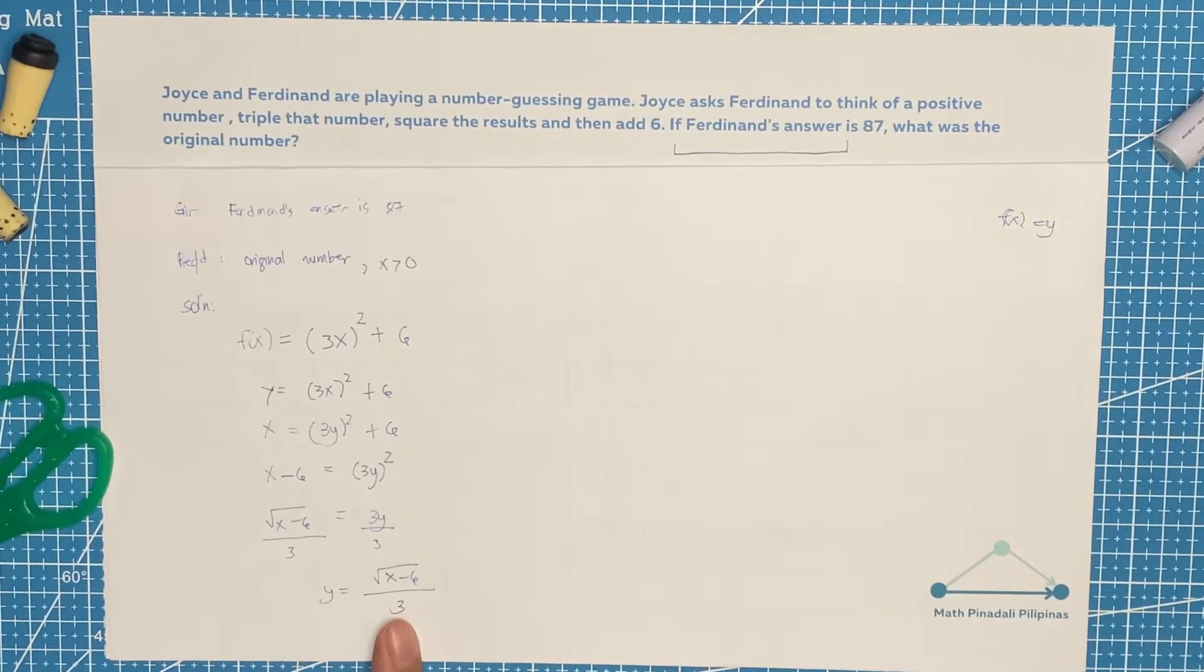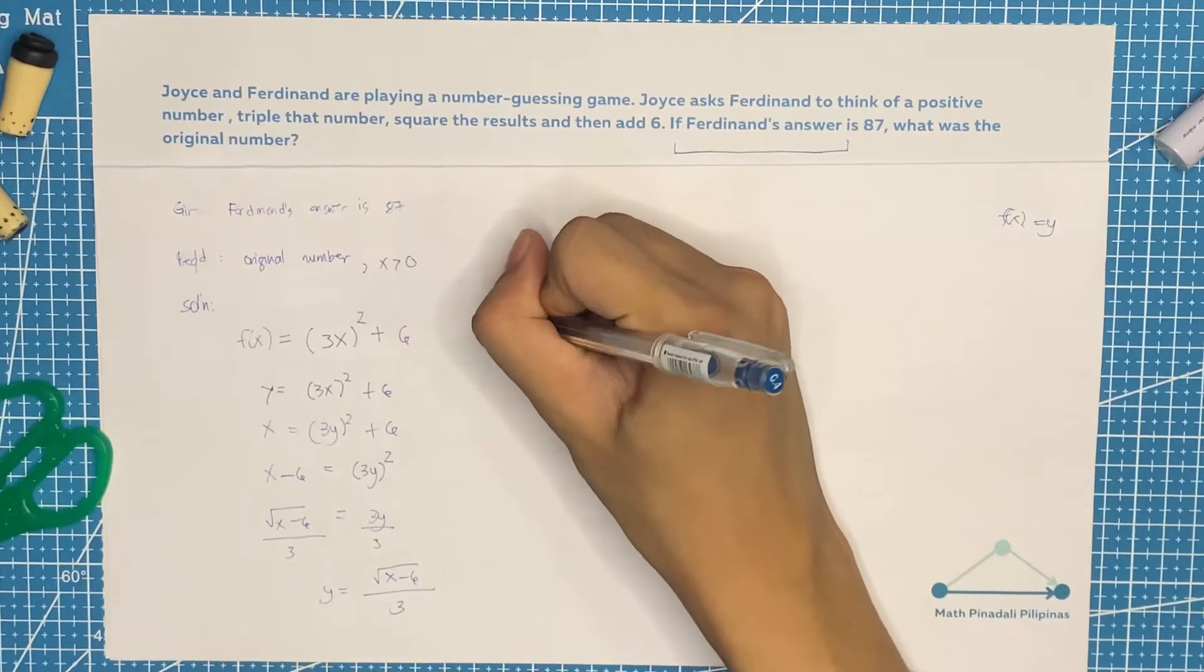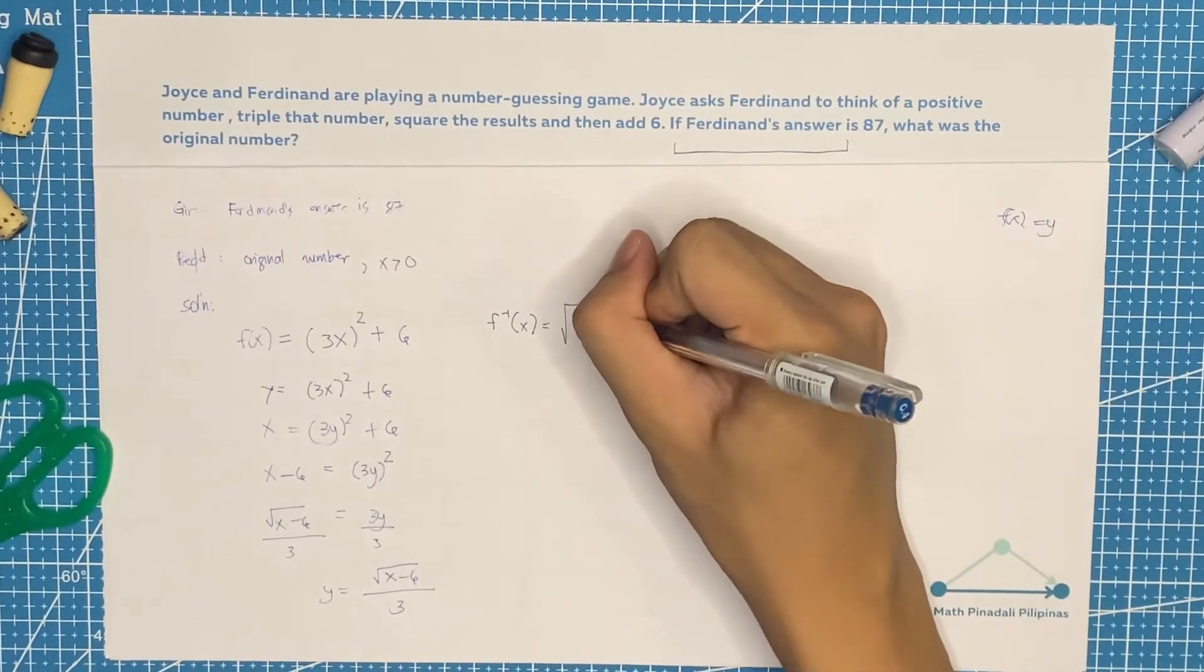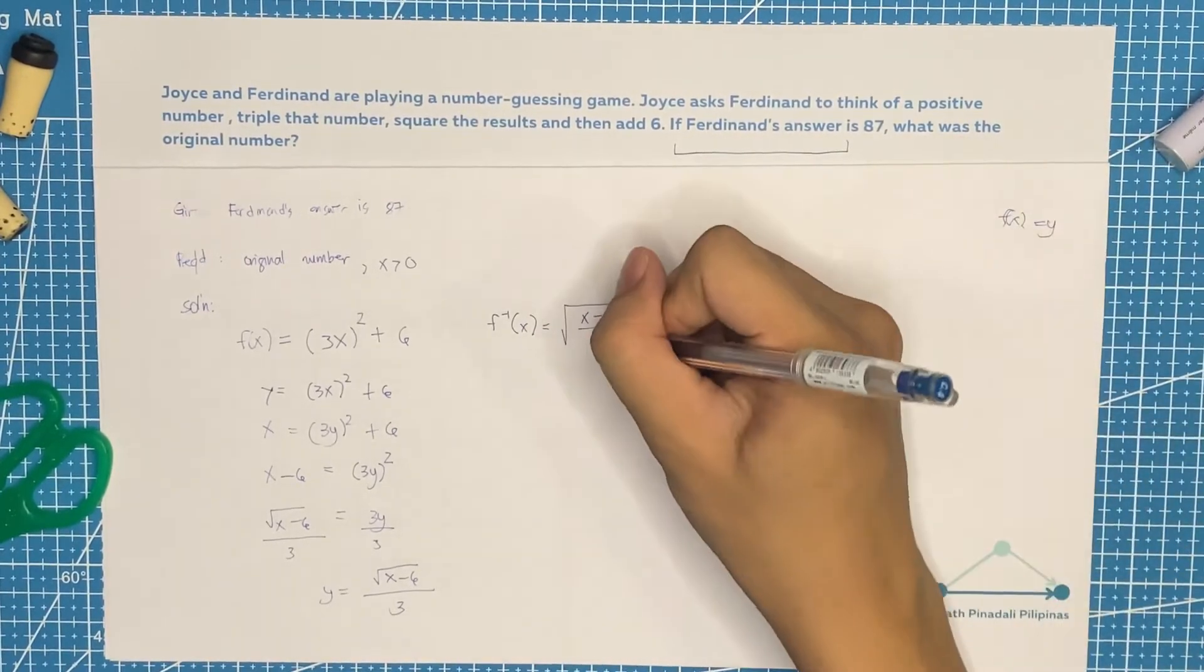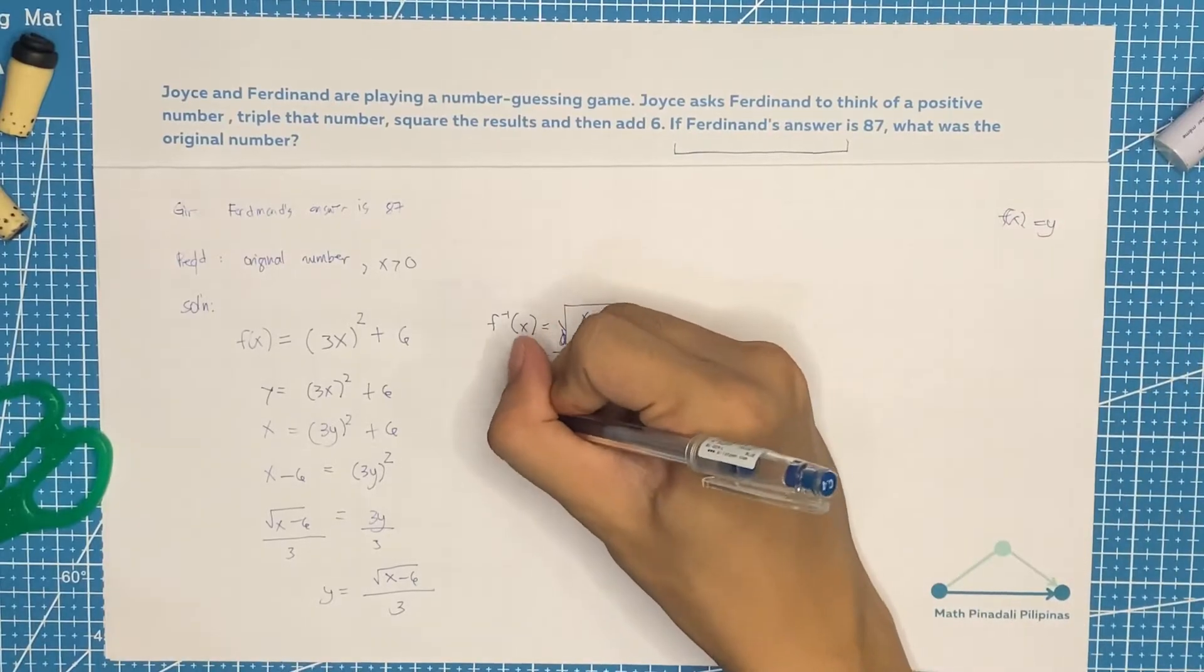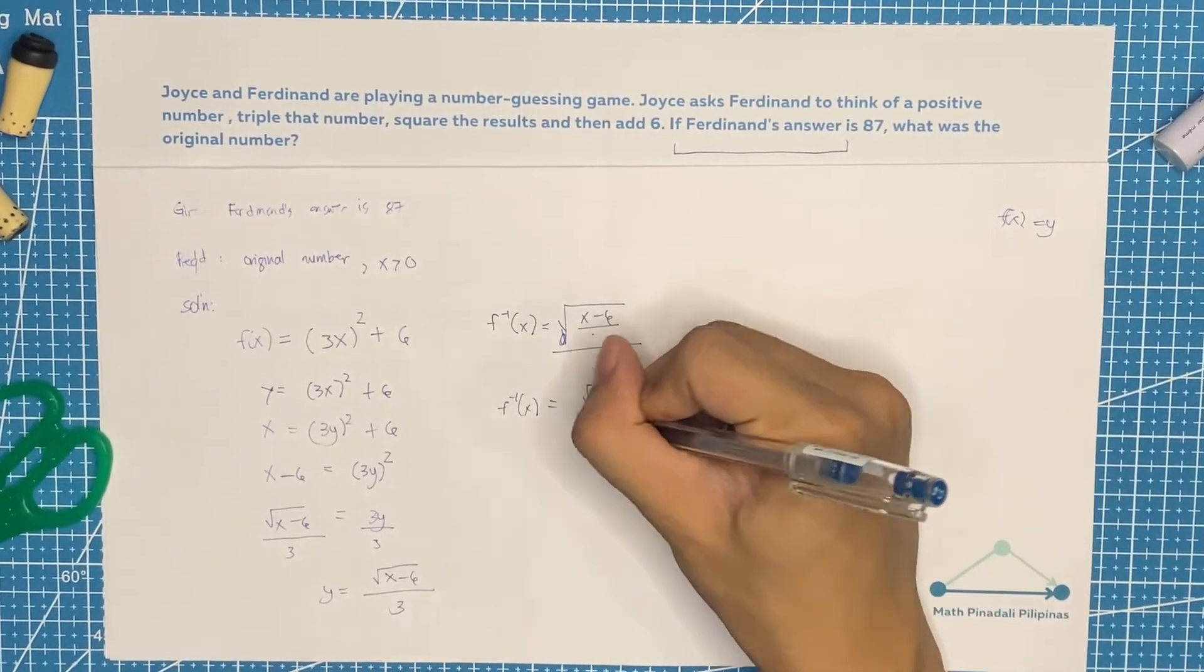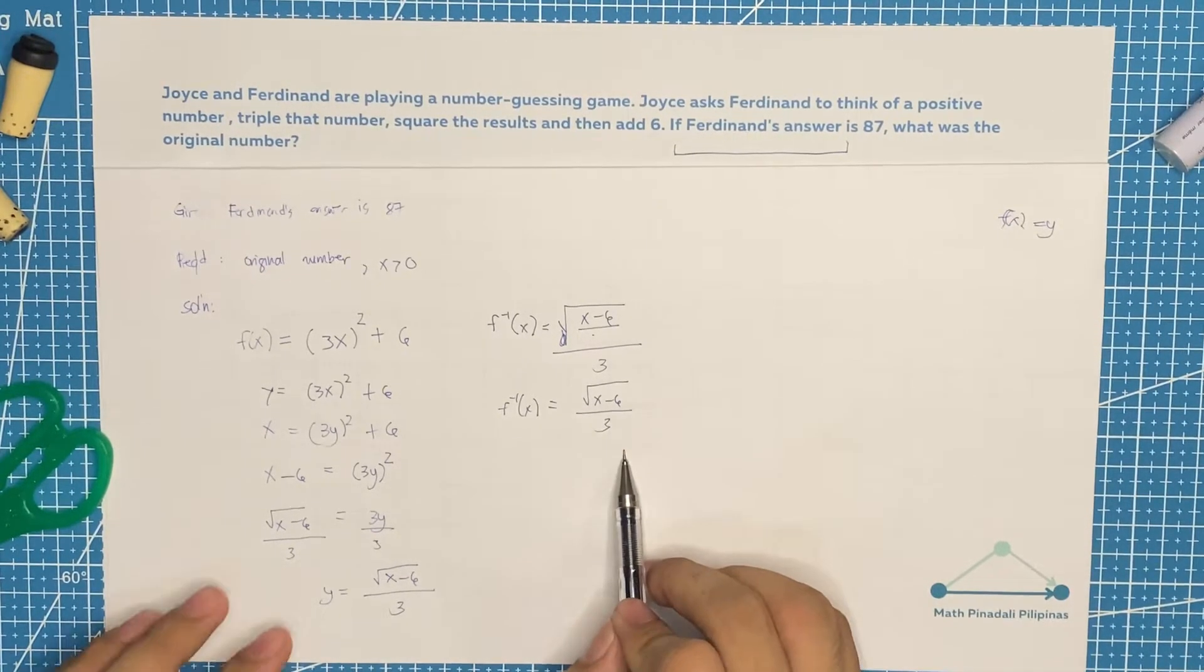Now, the inverse function of this one would be square root of x minus 6 over... sorry, square root of x minus 6 all over 3. Let me write it again. Equals square root of x minus 6 over 3. Now, the 3 is not included inside the square root.